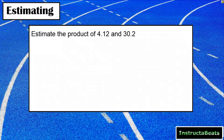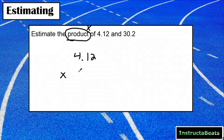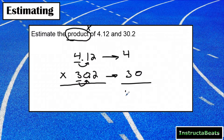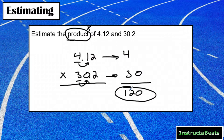Let's practice a little bit of estimating. So if we want to estimate the product — and even though this isn't a word problem, we always want to identify key information. We want to estimate the product of four and twelve hundredths and thirty and two hundredths. When we estimate, we run to the biggest place value. Four stays a four. Thirty would round to being close to thirty. So now I have the product of four times thirty, which would be one hundred twenty.